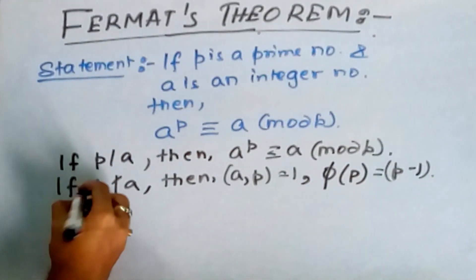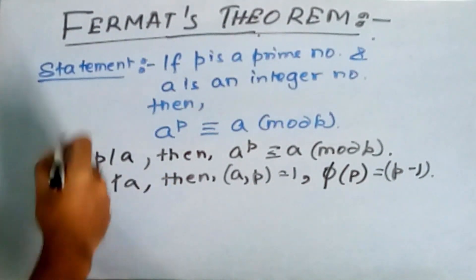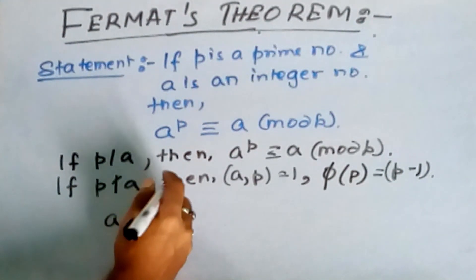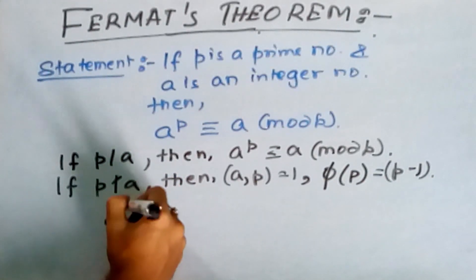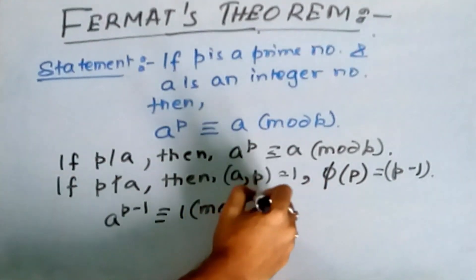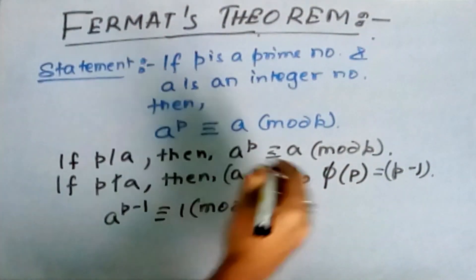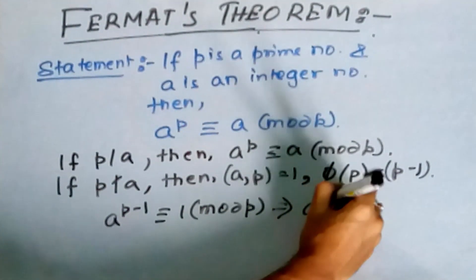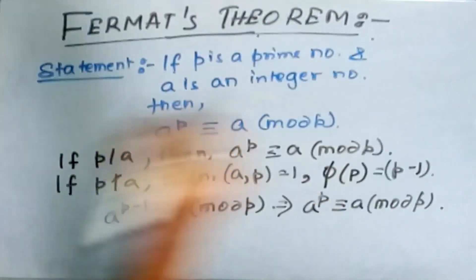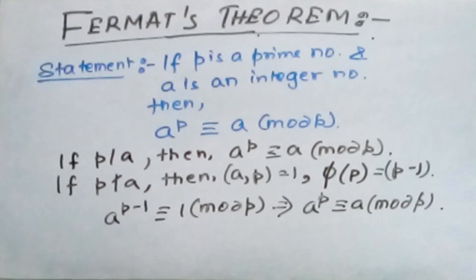Now with the help of Euler's theorem we can write a to the power p minus 1 is congruent to 1 mod p, which is nothing but if we multiply a in both sides we get a to the power p is congruent to a mod p. So this is how we prove it using Euler's theorem.